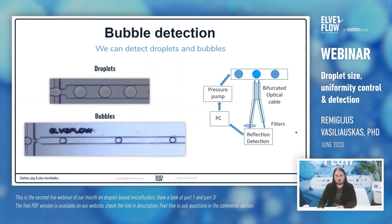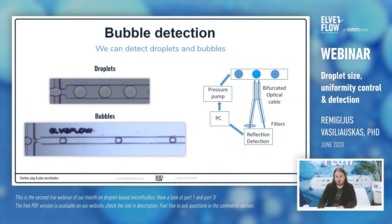We also noticed that many people work not only with droplets but also with bubbles. Looking with the eye, the difference between bubbles and droplets is minimal, but for the system the difference is significant. So we have modified the system to detect bubbles as well. Instead of collecting fluorescent light, we collect reflected light and don't use filters for fluorescent light. All other system parts are the same. Because bubbles have much better reflection compared to droplets, we can detect them even better.